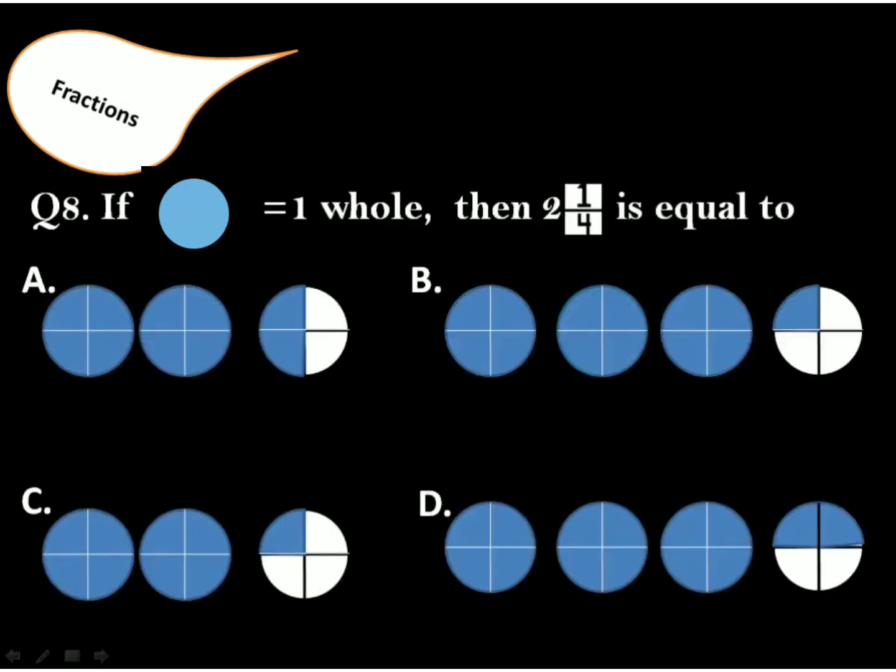Question 8: If blue circle is equal to 1 whole, then 2 1 by 4 is equal to... The correct answer is option C. It has two blue circles and one fourth blue circle.